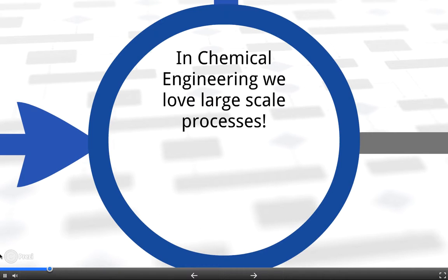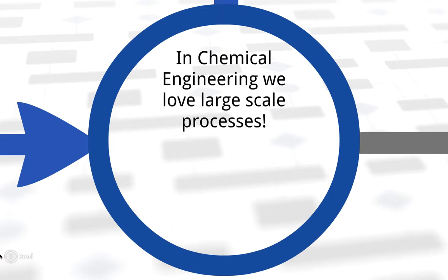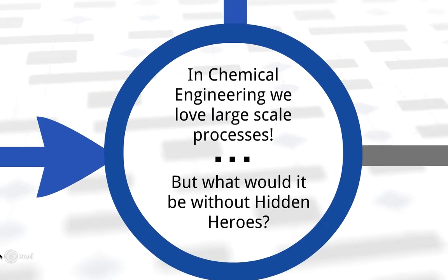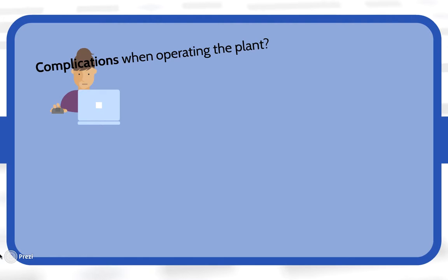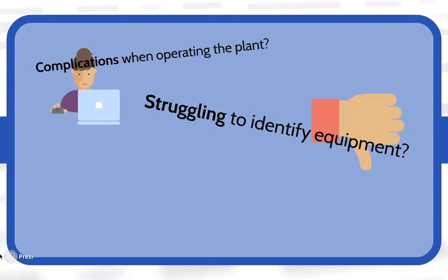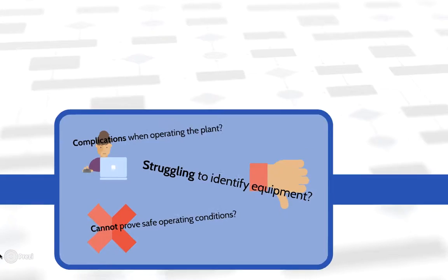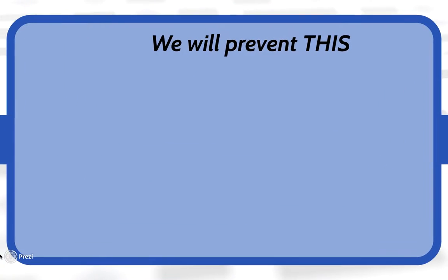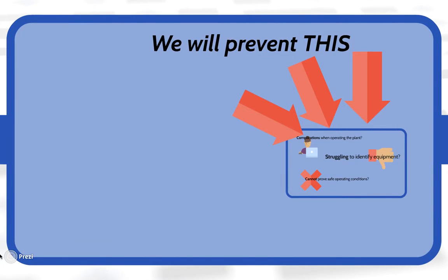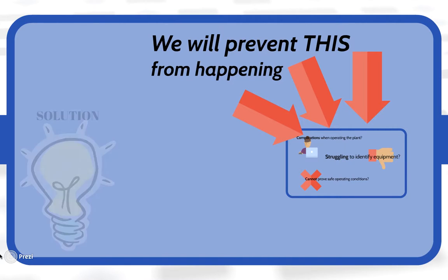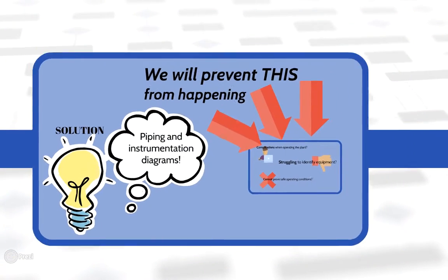In chemical engineering we love large-scale processes, but what would it be without hidden heroes? Are you having complications when operating the plant, or perhaps struggling to identify equipment? Maybe you cannot prove safe operating conditions. The hidden heroes prevent this from happening. The solution is piping and instrumentation diagrams.